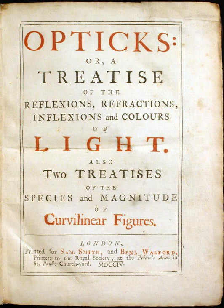Alfvén, H., Fälthammar, C.G., 1963. Cosmical Electrodynamics. Oxford University Press. Hannes Alfvén won the Nobel Prize for his development of magnetohydrodynamics, the science that models plasma as fluids. This book lays down the groundwork, but also shows that MHD may be inadequate for low-density plasmas such as space plasmas.